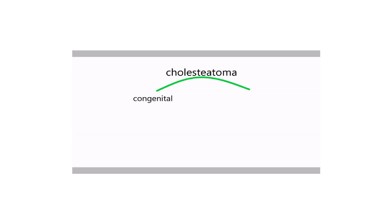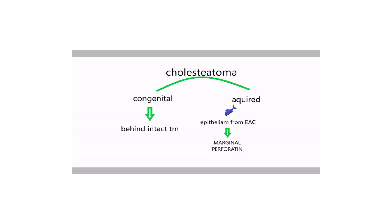To summarize: cholesteatoma has two types — congenital and acquired. In congenital, epithelium is trapped inside during or before formation of the middle ear cleft. In secondary acquired, epithelium from the external auditory canal migrates into the middle ear. In primary acquired cholesteatoma, the retraction pocket theory applies, and the most common site is Prussak's space.